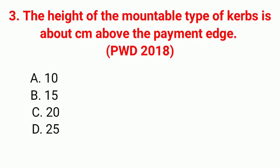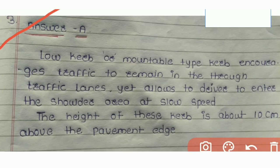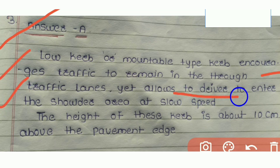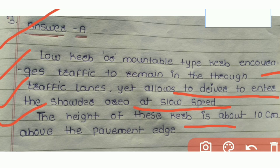Question 3: The height of a mountable type of kerb is about 10 cm above the pavement edge — correct answer option A: 10. A low kerb or mountable type encourages traffic to remain in through traffic lanes, and allows the driver to enter the shoulder area at slow speed. The height of this kerb is about 10 cm above the pavement edge.